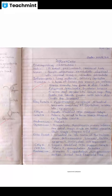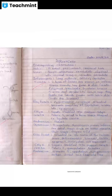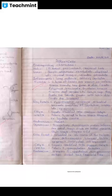Subclass Gamopetalae — Gamopetalae means petals are united. Stamen epipetalous. Then Series Inferi: the flower is epigynous, meaning the ovary is inferior — when the ovary lies below the attachment of the floral parts, it is called an inferior ovary.